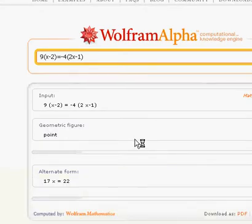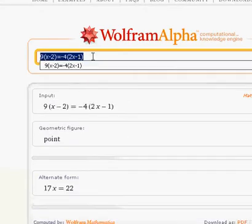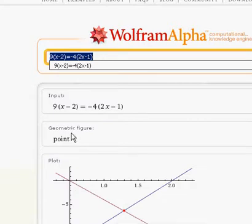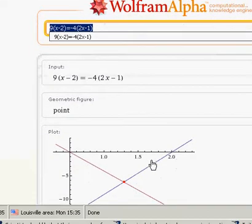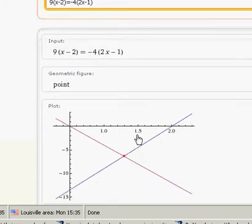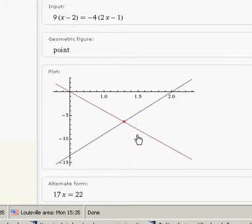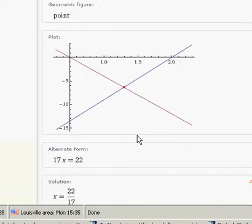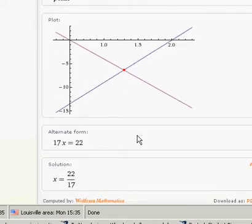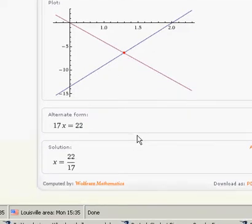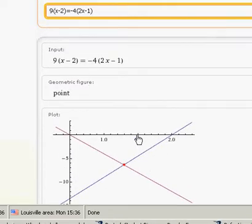Give it a second to think about it. There's the equation. It's going to generate a geometric figure, which is plotted down below. And there it is. Those are the slopes of the two different equations. And the alternate form. Hmm. Interesting. I wonder if I entered in the equation incorrectly.